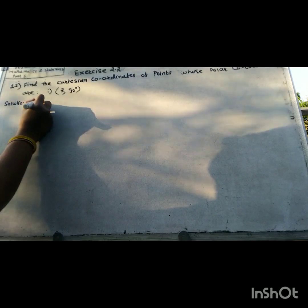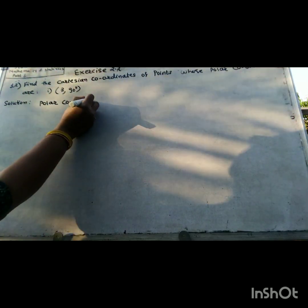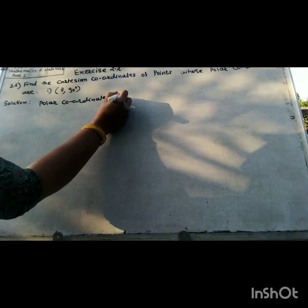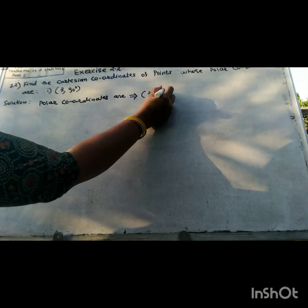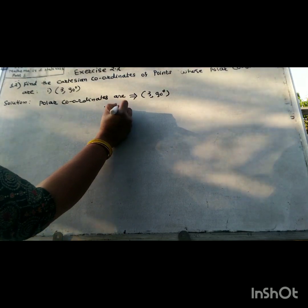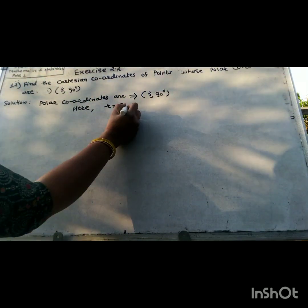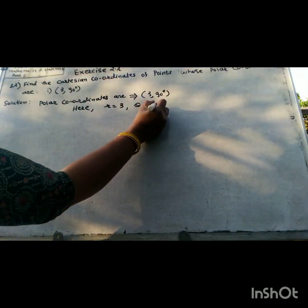Example 12: Find the Cartesian coordinates of the point whose polar coordinates are (3, 90°). Here r is equal to 3 and theta is 90 degrees.